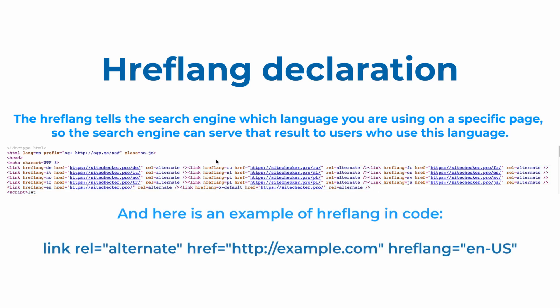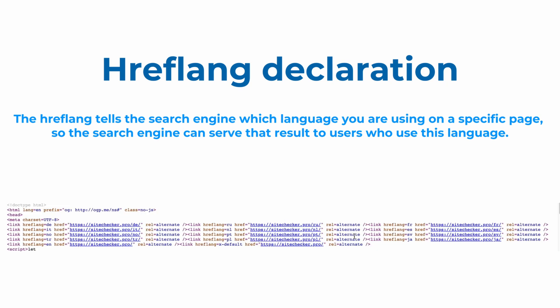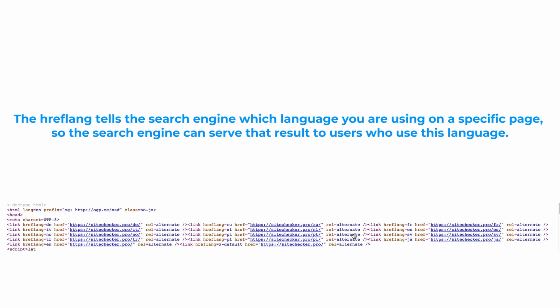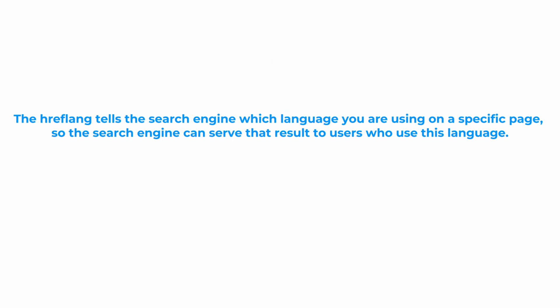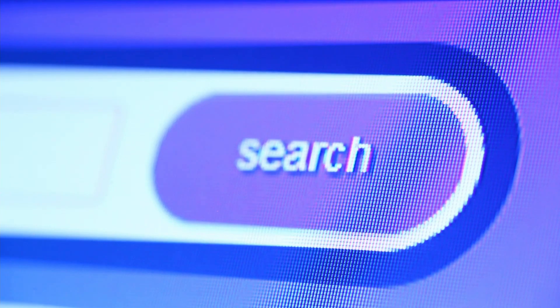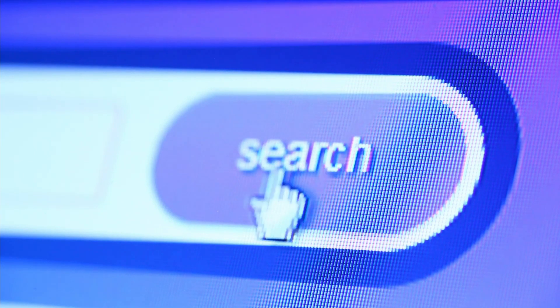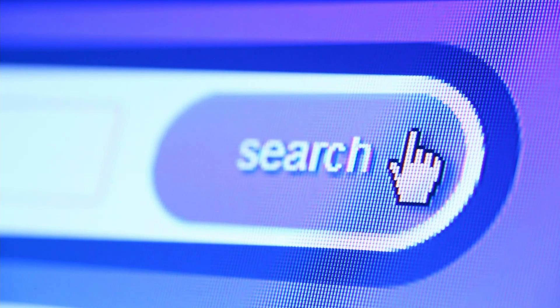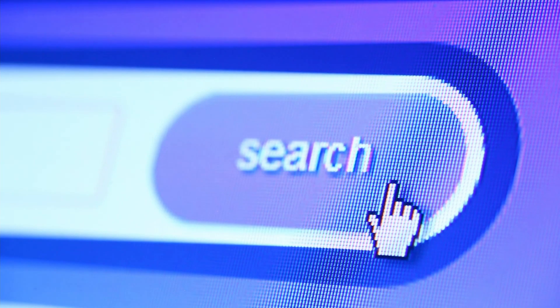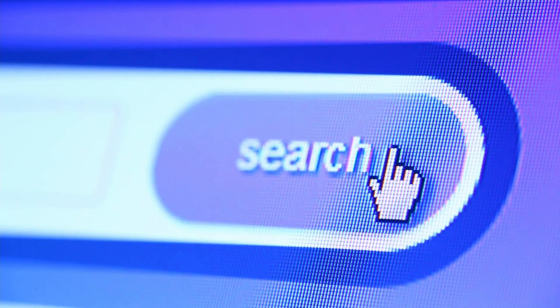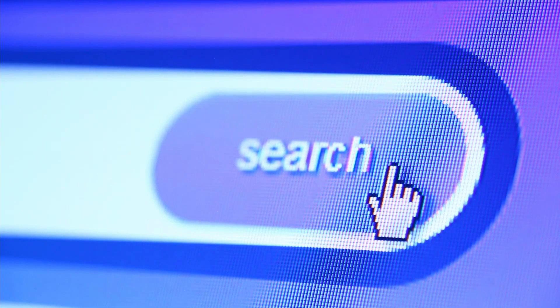Here you can see an example of how hreflang can look in code. For example, if you create a different language version — Spanish, for example — of your English language homepage, you would provide it to users by using a specific hreflang tag, so that users with relevant IPs are served that page in Spanish instead of the English version.